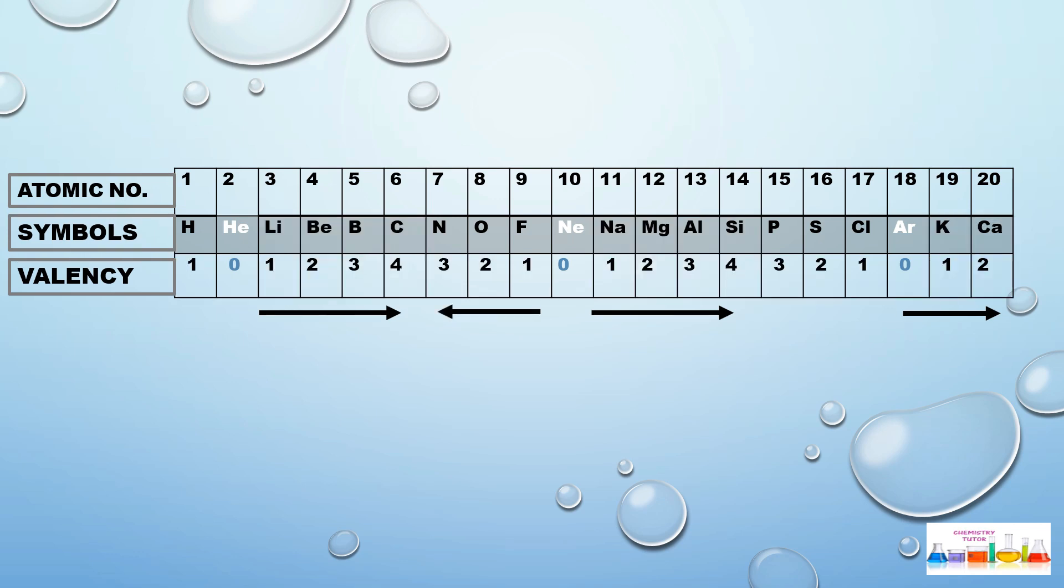Now we will assign the values 1, 2, 3 to fluorine, sulfur, and phosphorus from right to left. And the last one will be hydrogen - we will give the value 1. So in this way we will assign the values to these elements as well.